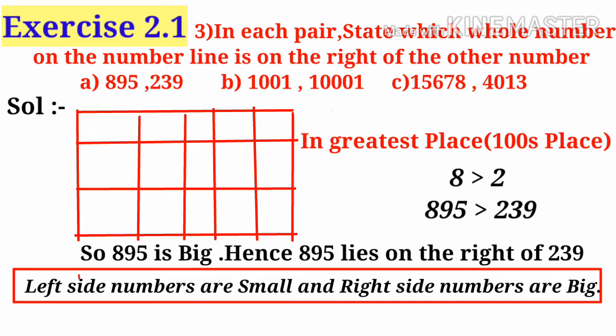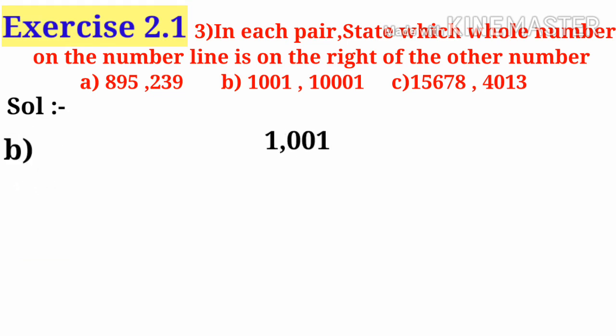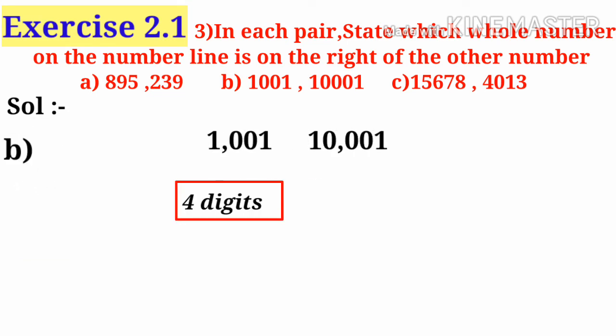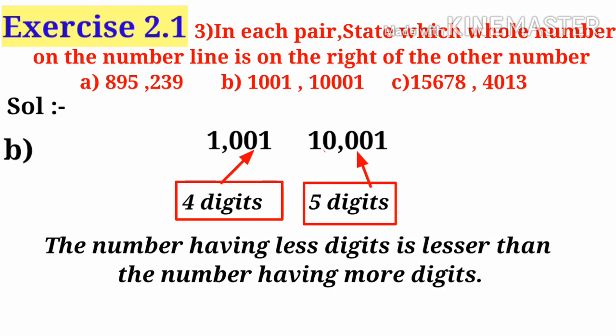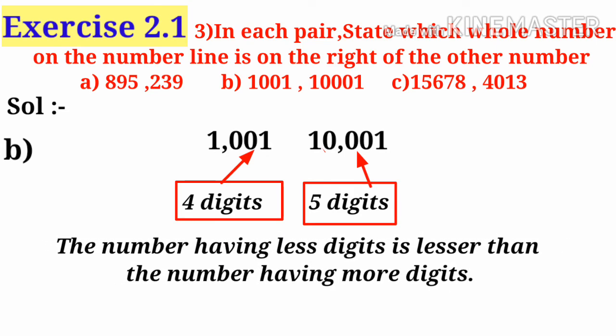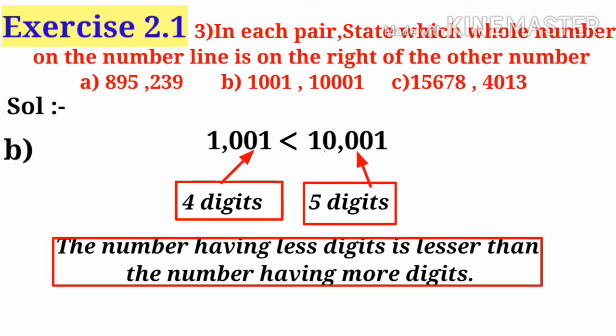Number b: 1,001 has 4 digits and 10,001 has 5 digits. I already told in the previous video that the number having less digits is lesser than the number having more digits.